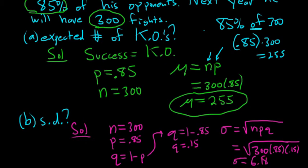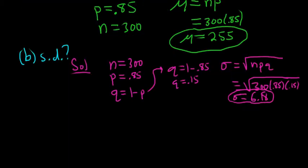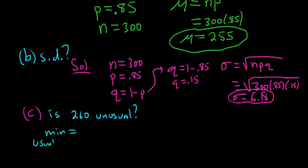So now we have the mean and we have the standard deviation. So now we can ask some questions regarding whether things are usual or unusual. For example, is 260 unusual? Would it be unusual for Mr. Tyson to knock out 260 opponents? Well, we can use the range rule of thumb.